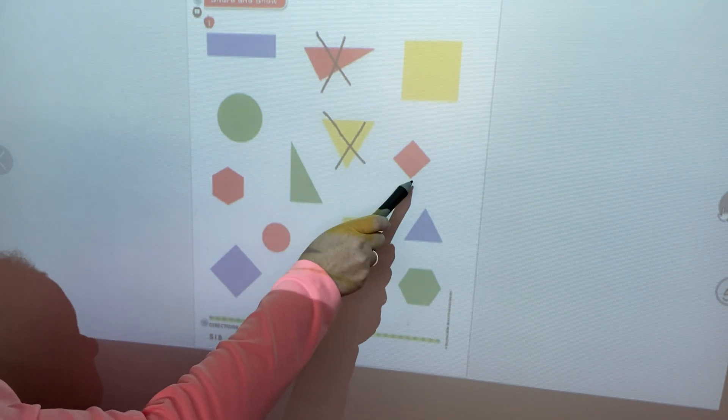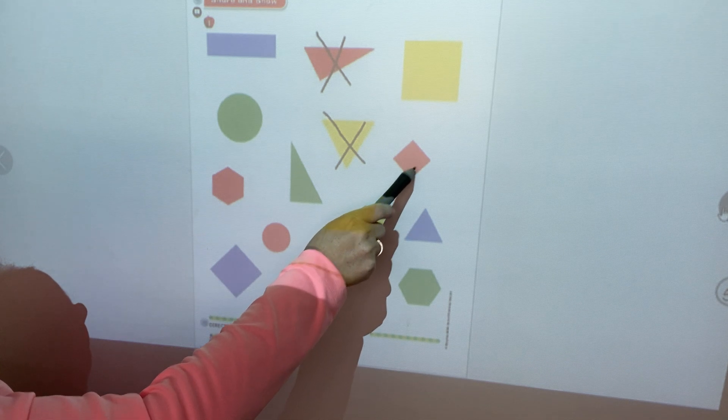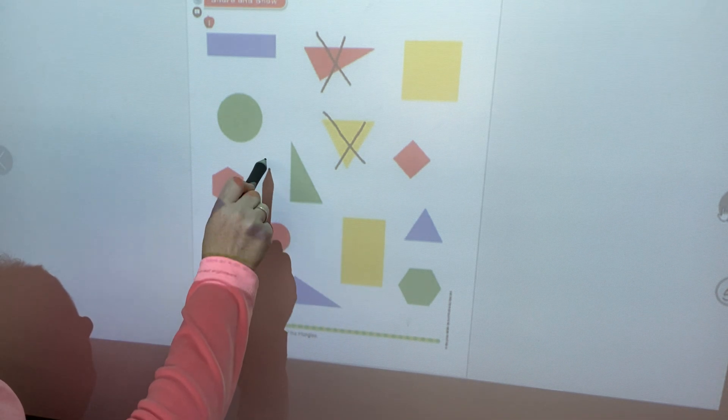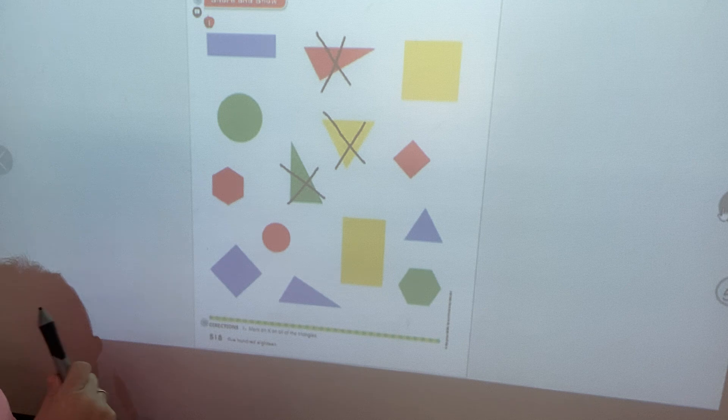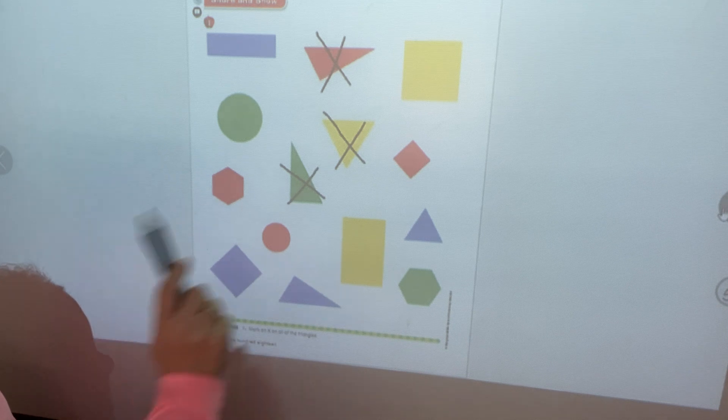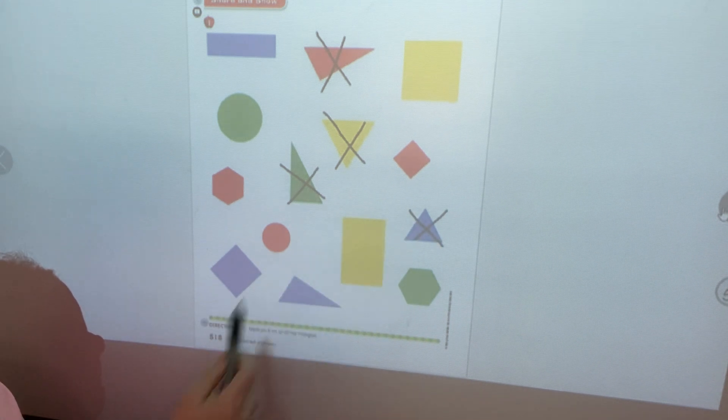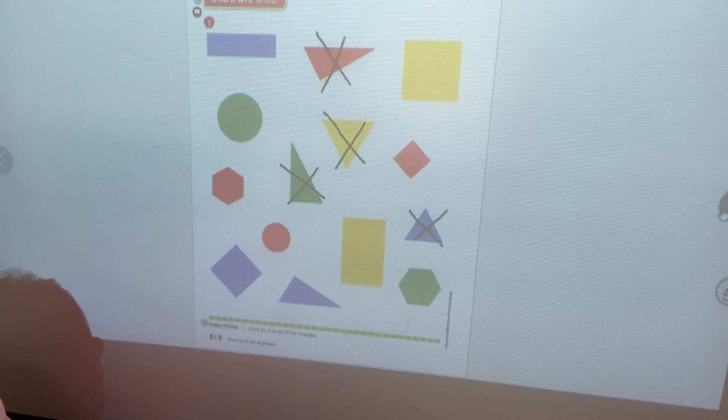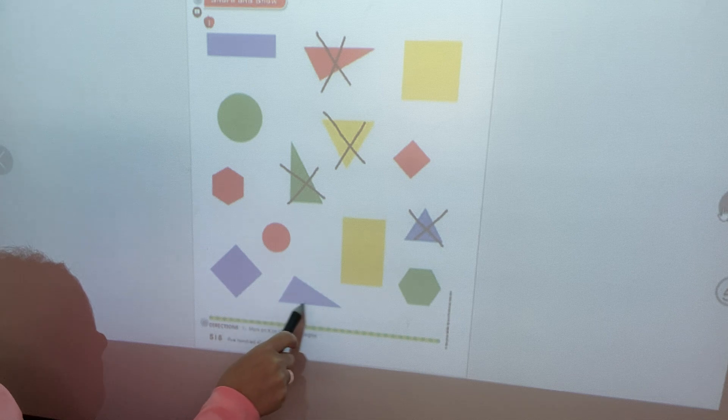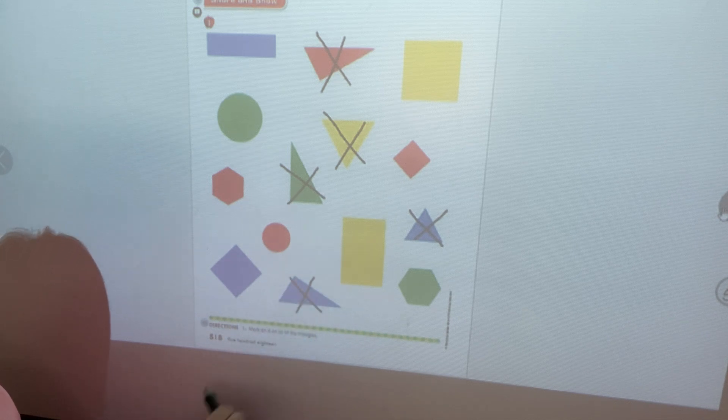Here's one. Is that one? No. That one has four corners. How about here we go? Do you see any more? Here's one here. And there's one more triangle. Do you see it? It's right here. So go ahead and put an X on that one.